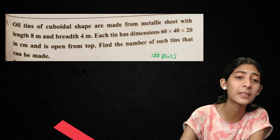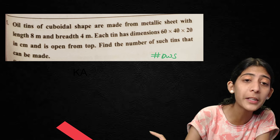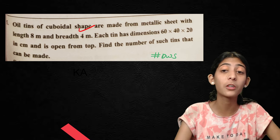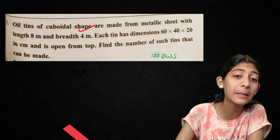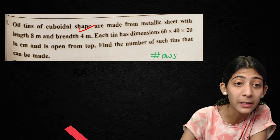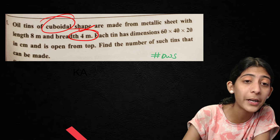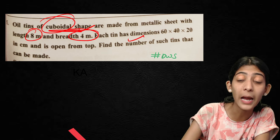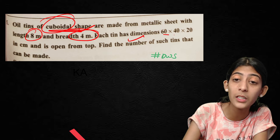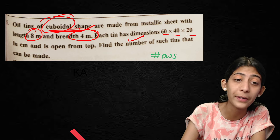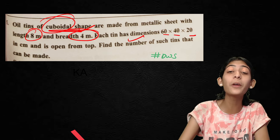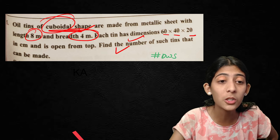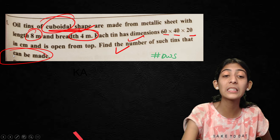Last question: Tins of cuboidal shape are made from a metallic sheet with length 8 cm and breadth 4 cm. Each tin has dimensions 16 × 40 × 20 cm and is open from the top. Find the number of such tins that can be made.